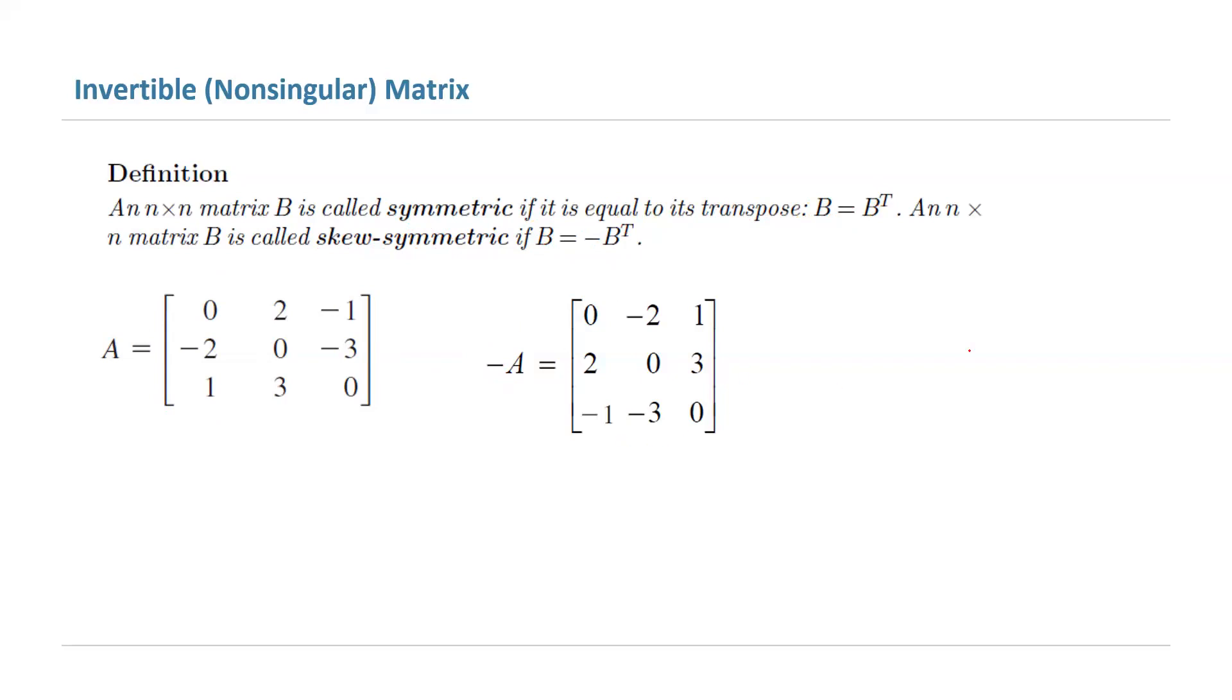Now, if you find the transpose of the matrix, remember we're going to take the first row of the original matrix and form the first column of the transpose. Then you're going to take the elements on the second row and construct the second column of the transpose matrix. Finally, you're going to take the entries on the last row and construct the last column of the transpose matrix.